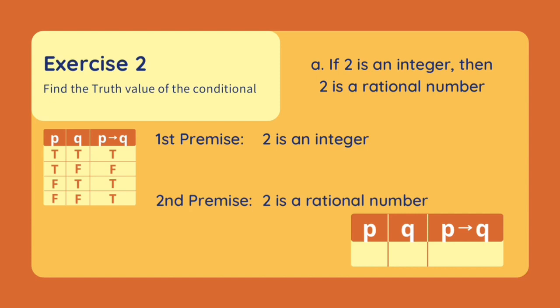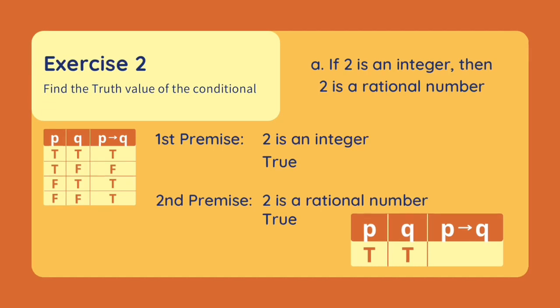Our first premise is '2 is an integer.' This is true because 2 is a number with no decimal or any fraction. Our second premise is '2 is a rational number.' This is also true because 2 can be expressed as 2 over 1 and 1 is not equal to 0. Since both our premises are true, our conditional is true.